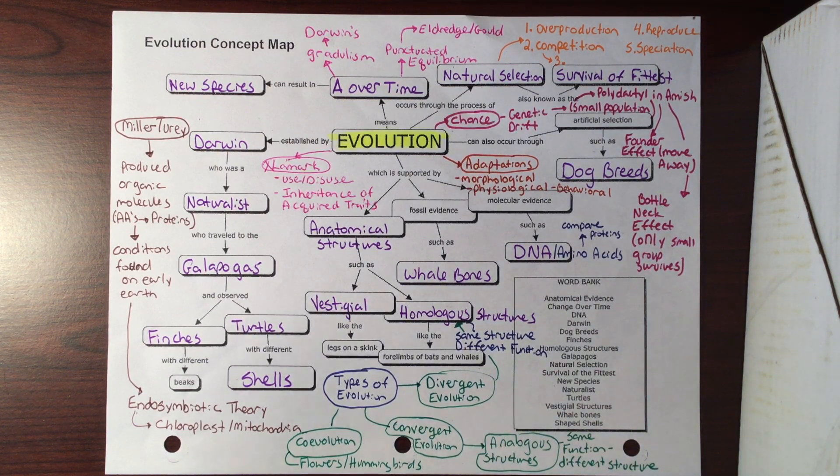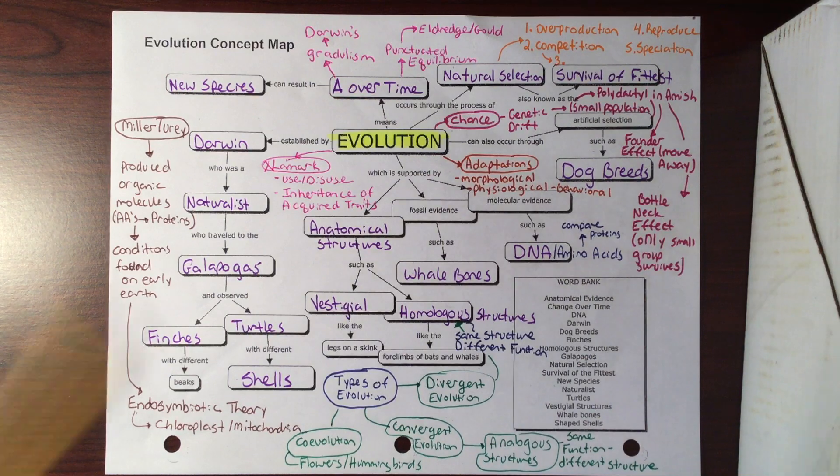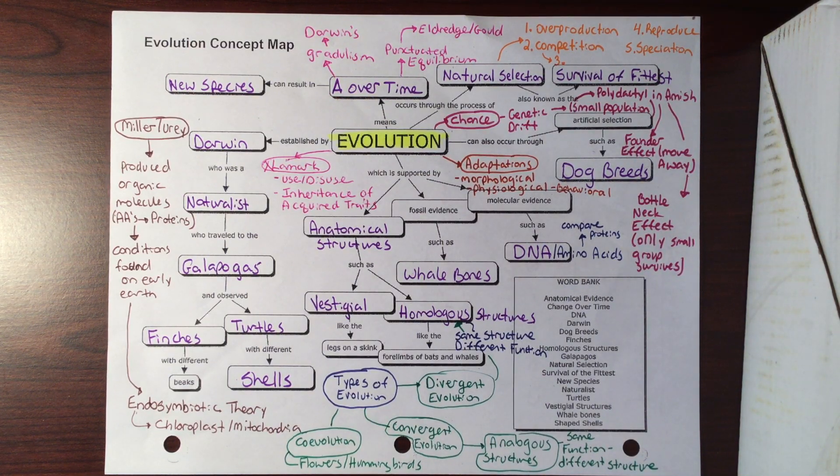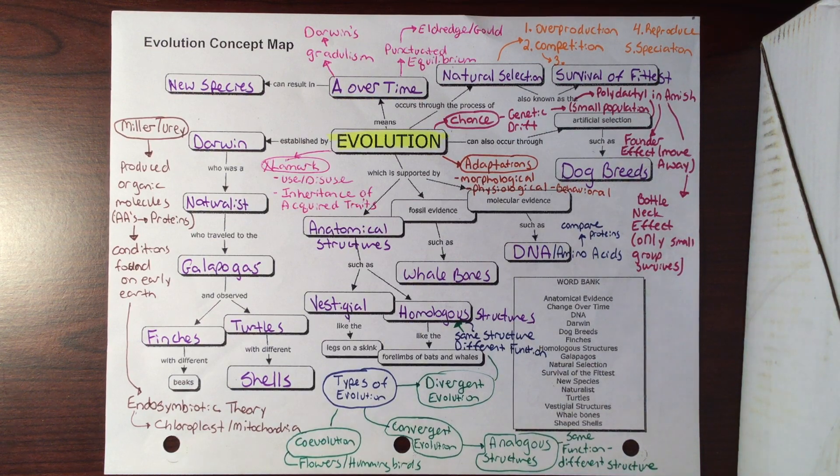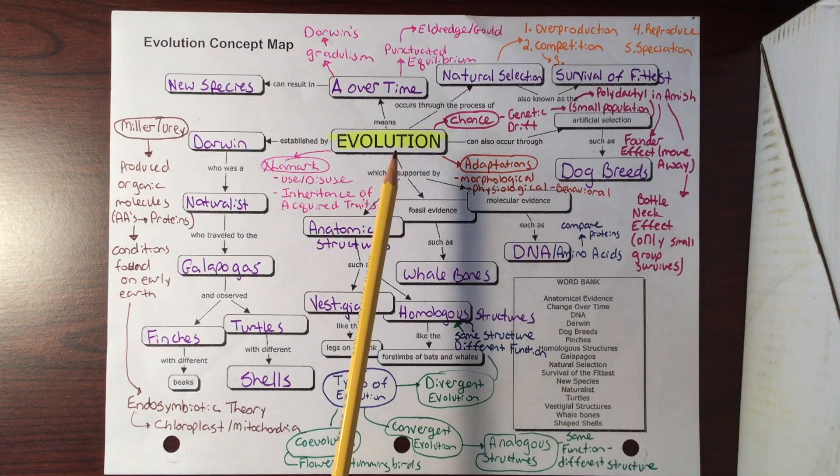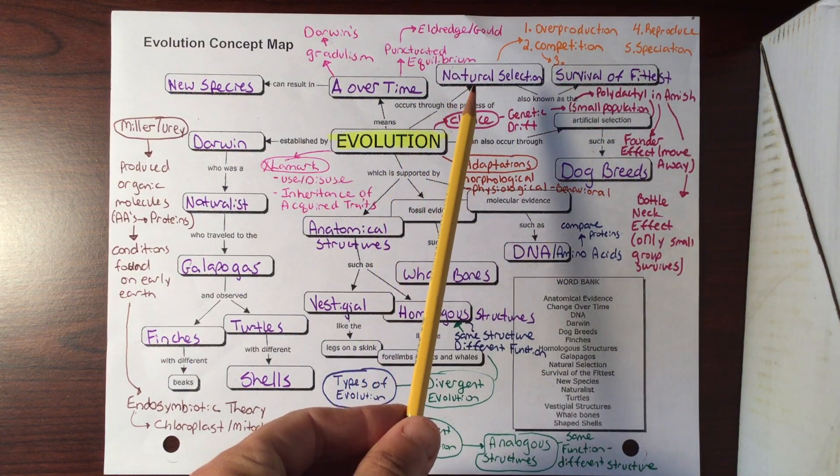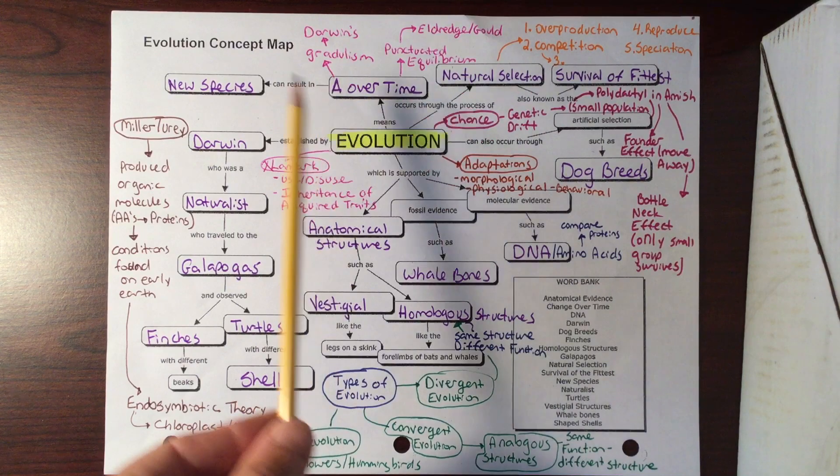Over thousands of years you see how things change, where Eldridge and Gould talked about punctuated equilibrium. They said there would be a bunch of changes and then it would stay the same for a very long period of time, and then you would see another change. Two different ideas on how this idea of evolution occurred over time.